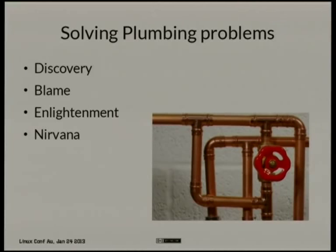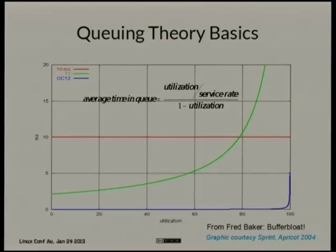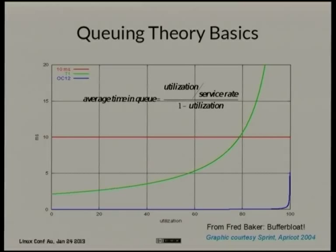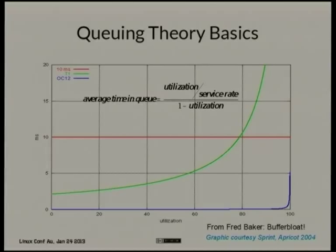Basic queuing theory — we're in a university, so there's some math. If you look at a network, utilization is 100% at one end and empty at the other. The delay you experience is a function of how busy it is, like waiting at a store before Christmas. With modern fast networks, you get this knee — it looks fine, and all of a sudden it's off the graph, going to infinity at 100%.